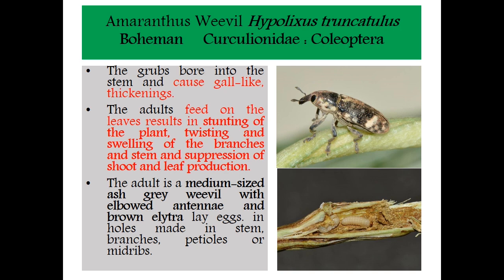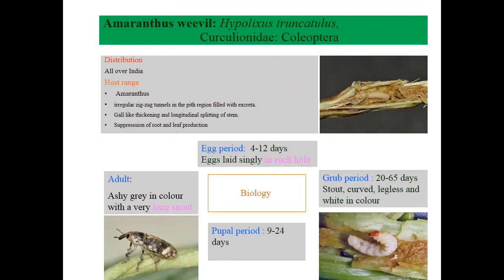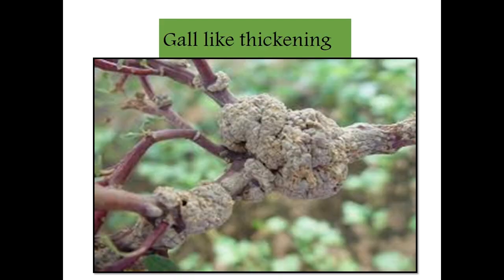You can see the grub and adults in this slide. Coming to biology of Amaranthus Weevil: egg period is 4 to 12 days, eggs are laid singly and each hole branches to extend. Grub period is 20 to 60 days; it is stout, curved, woodboring, and legless, white in color. Pupal period is 9 to 24 days. The adult has a peculiar identification key. See the gall-like thickening in Amaranthus — it is a peculiar symptom of Amaranthus weevil.